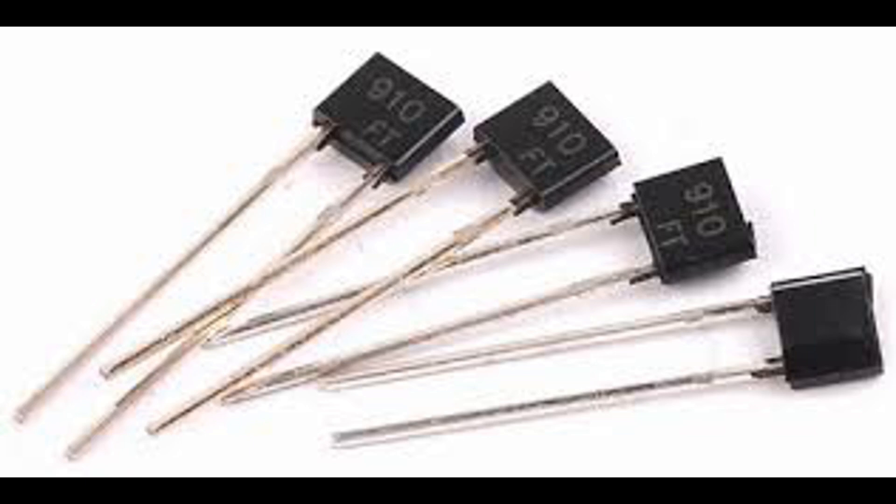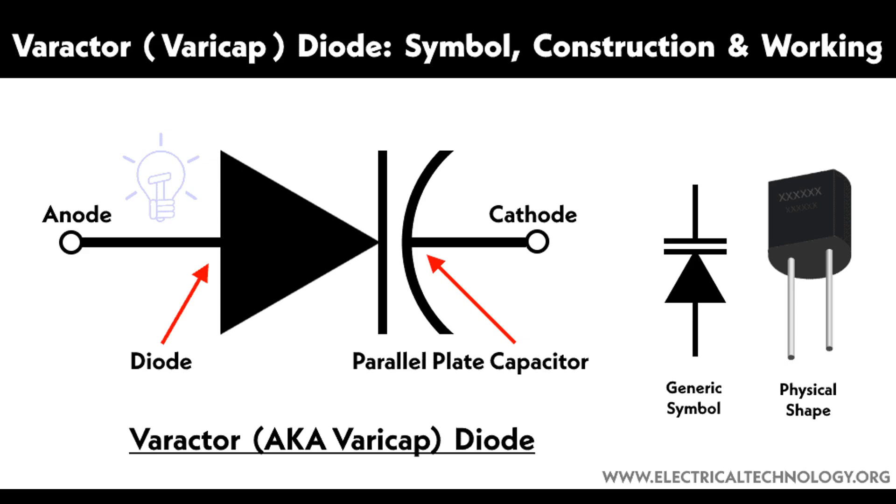Phase-locked loops (PLLs): They help in frequency synthesis and stabilization in communication systems. Frequency modulators: Varactor diodes are used in frequency modulation circuits to vary the frequency of the carrier signal.